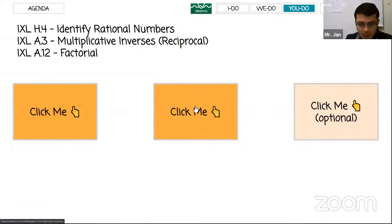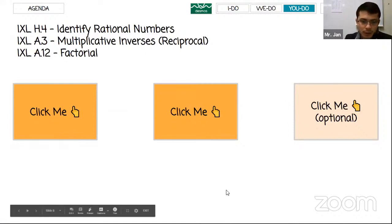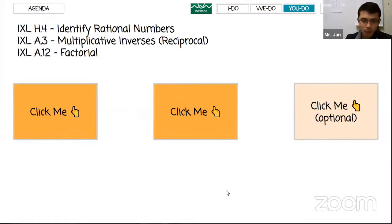Now go back to your IXLs. The first one is rational or irrational, the next one is reciprocal, and the last one is optional — it's factorial. Let me open up my chat box.